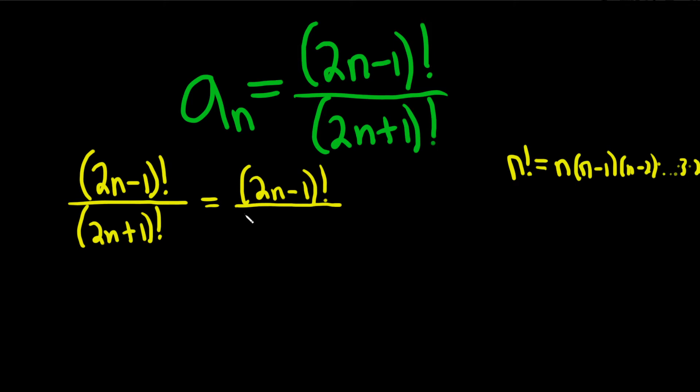So in this case here, it would be 2n plus 1. And then you subtract 1. So when you subtract 1 from 2n plus 1, you just get 2n. And then you do it again and then you get 2n minus 1, 2n minus 2, 2n minus 3. So I'll write it just so you see it. 3, 2, 1.